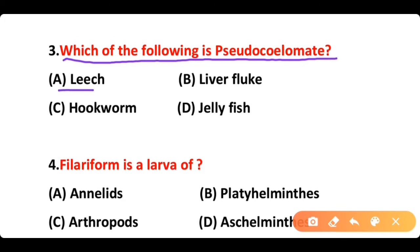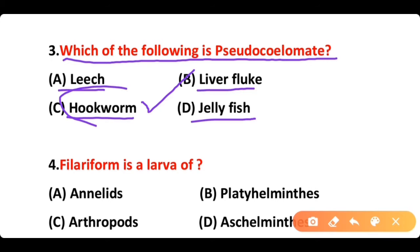Question number 3: Which of the following is pseudocoelomate? Option A: Leech, Option B: liver fluke, Option C: hookworm, Option D: jellyfish. The correct answer is option C. Hookworm is a pseudocoelomate. Hookworm belongs to phylum Nematoda.